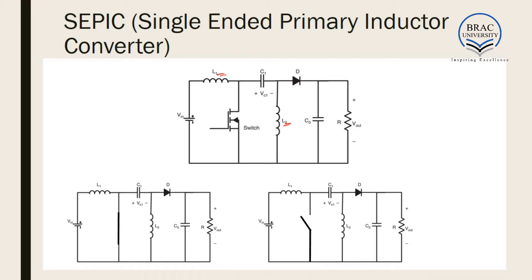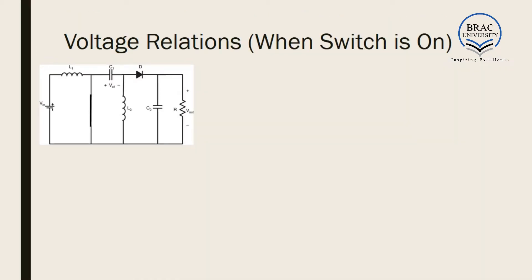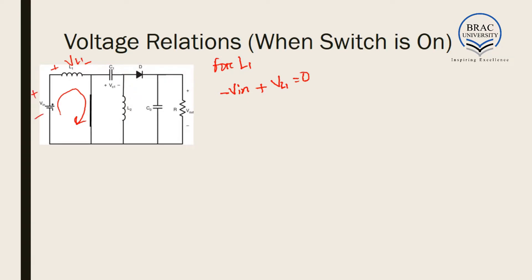We will again consider the on and off states separately. When the switch is on, current flows through L1 in this direction. Applying KVL, we get minus VIN plus VL1 is equal to 0, so VL1 is equal to VIN. We put this as equation number 1.